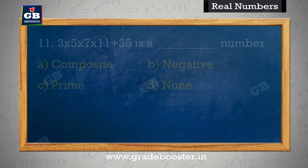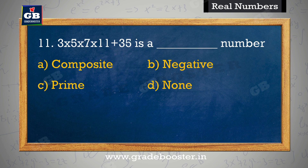3×5×7×11 + 35 is a dash number. 3×5×7×11 + 35 ek dash number hai. A. Composite, B. Negative, C. Prime, D. None.